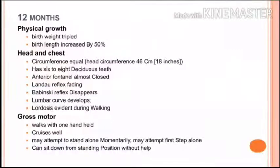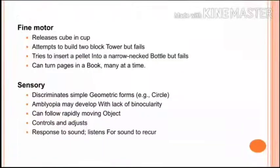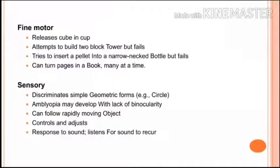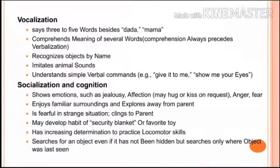In gross motor at one year, the baby can walk with one hand held and may attempt to stand alone momentarily. In fine motor, the baby releases a cube into a cup and tries to insert a pellet into a narrow-necked bottle but fails. In sensory development, the baby discriminates simple geometric forms like a circle, follows rapidly moving objects, and responds to sound.